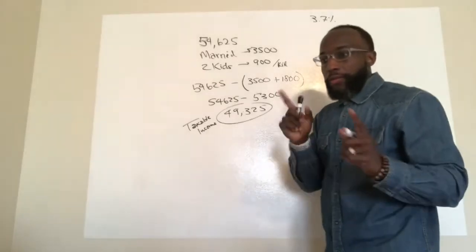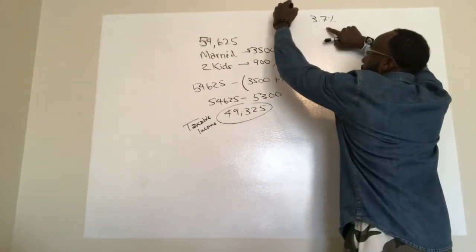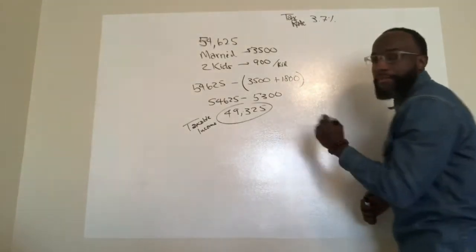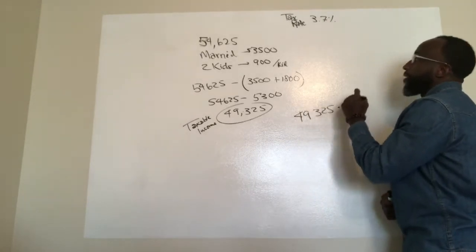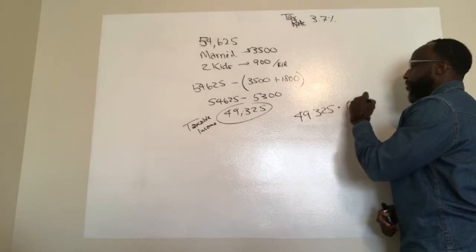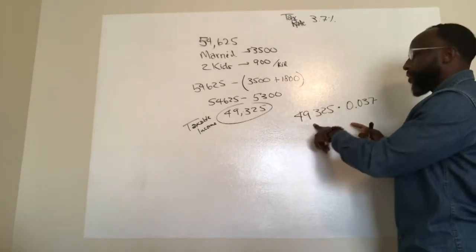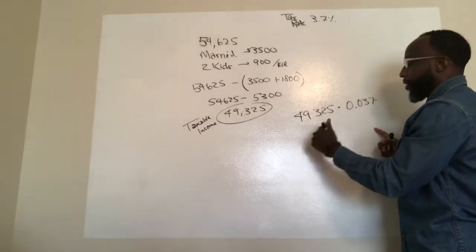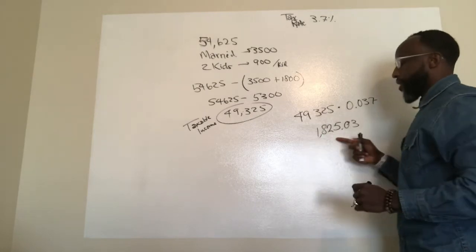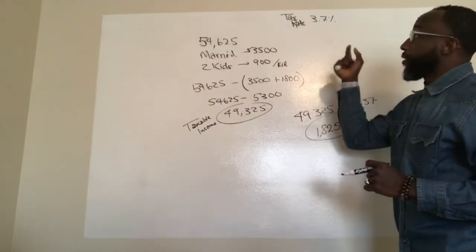And so basically what will happen is, to figure out what's the tax that you're going to have to pay, or that's, yeah, the taxes you're going to have to pay, you'll multiply, this is the tax rate, this is the tax amount, you'll multiply the tax amount by the taxable income. So that means the math will be, it'll be 49,325 times 3.7%. But you got to change 3.7% into a decimal, so that's going to be 0.037. I put the 0 in front because like decimal calculators do that. So you're basically multiplying 49,000 and some change by 0.037. That's going to give you an amount of 1,825 and 3 cents. So 1,125. So that's the amount of taxes that you'll have to pay at the end of the year in this state.